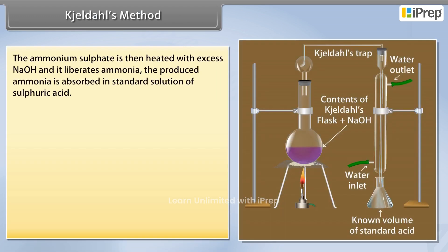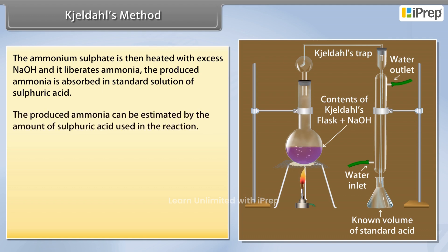The ammonium sulfate is then heated with excess NaOH, which liberates ammonia. The produced ammonia is absorbed in a standard solution of sulfuric acid, and it can be estimated by the amount of sulfuric acid used in the reaction.